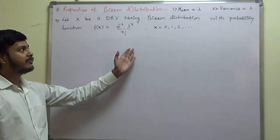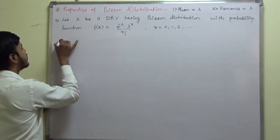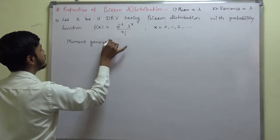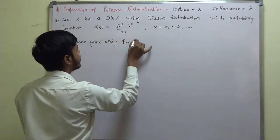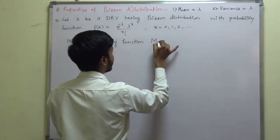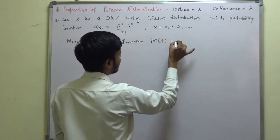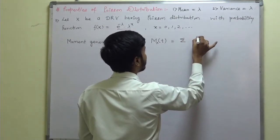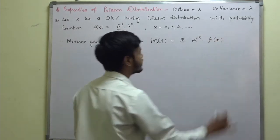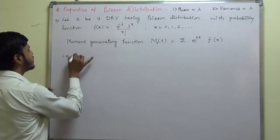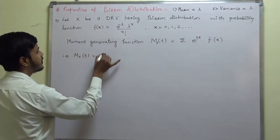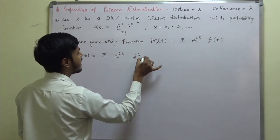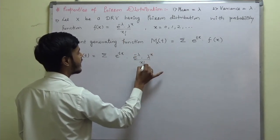Now, since we are going to find the moment generating function, we denote it by M_X(t), or sometimes M(t). The moment generating function is defined as M_X(t) equals summation of e to the power tx into f(x). Substituting f(x), this becomes summation of e to the power tx into e to the power minus lambda, into lambda to the power x, upon factorial x.